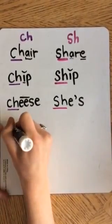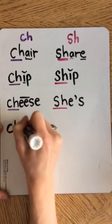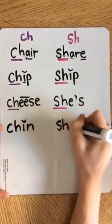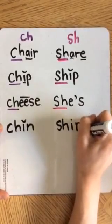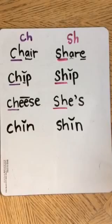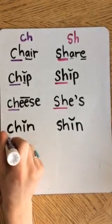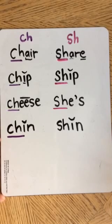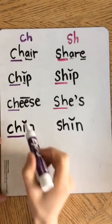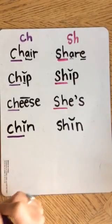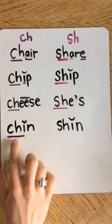Now let's look at CHIN and SHIN. These are both the short I. CHIN is the place on your face right below your mouth that sticks out — it's your chin. In the three little pigs, they say, not by the hair on my chinny chin chin. So that's the word CHIN.